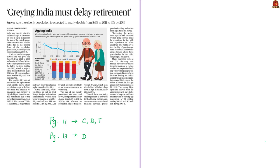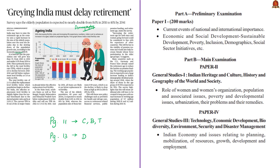The next news article is about projections given in the Economic Survey 2018-19 based on the demography of India. It is relevant for prelims under current events and sustainable development and demographics, and for mains under GS Paper 1 on population and associated issues, and GS Paper 3 on Indian economy, planning, growth and development.